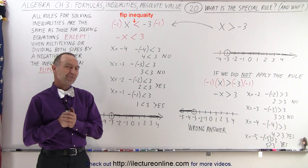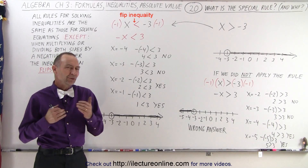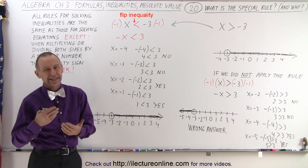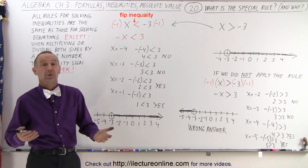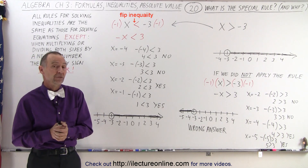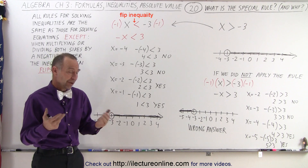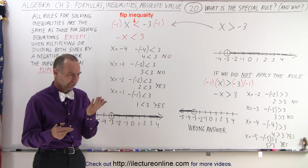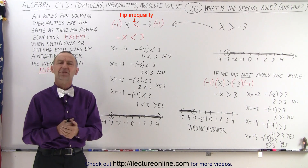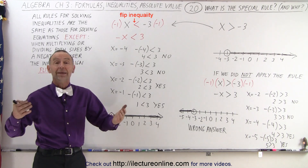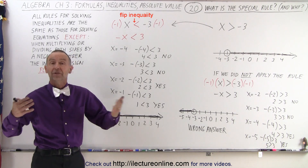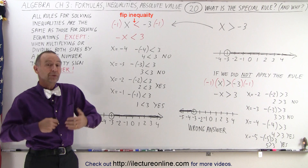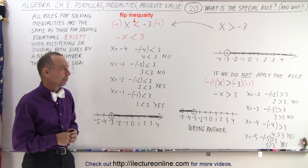Welcome to ElectronLine. You may wonder why we have that special rule for linear inequalities and why it works in the first place. You may say, if I multiply or divide by a negative number, I simply have to flip the inequality sign around. But why and how does that work? And why is that correct? So we're going to try and illustrate that point.